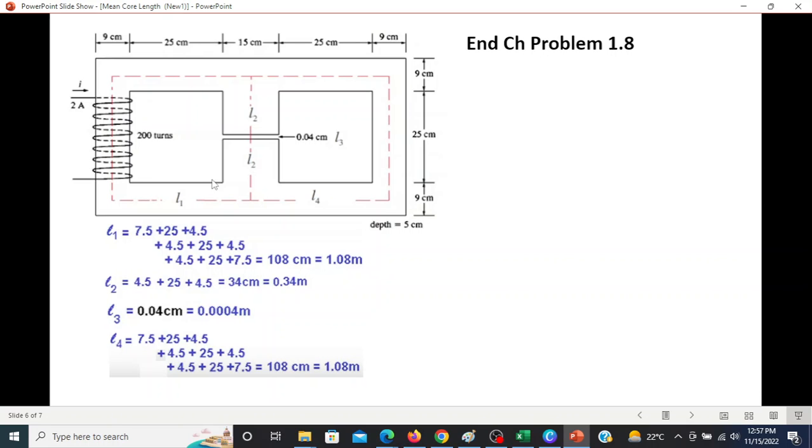L2 is this length. And you can see half of 9 is 4.5, then it's 25, and then 4.5 again, so 34 cm is 0.34 meter. This is already given in cm, 0.04, so we just divide it by 100, so it will be converted into meter. And L4 is basically same as L1, so it's the same dimension.